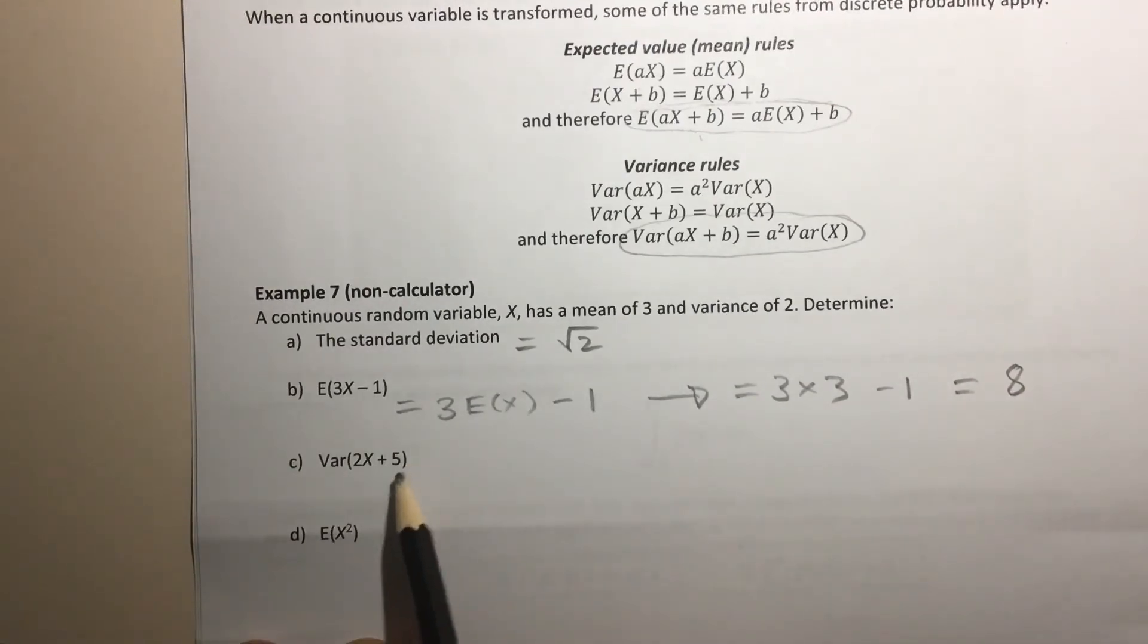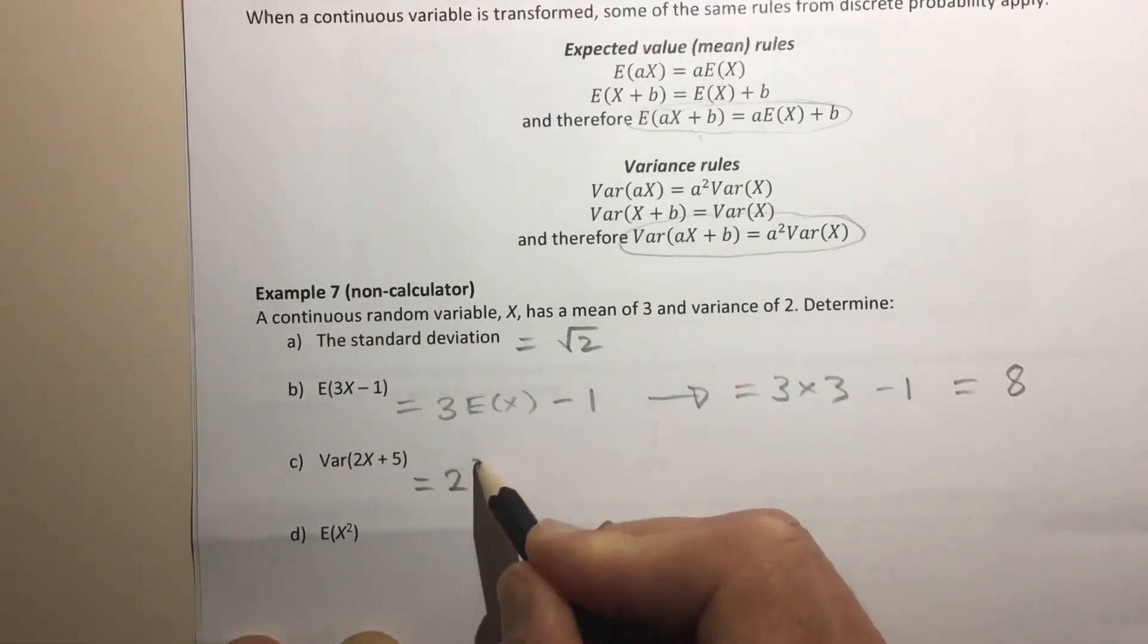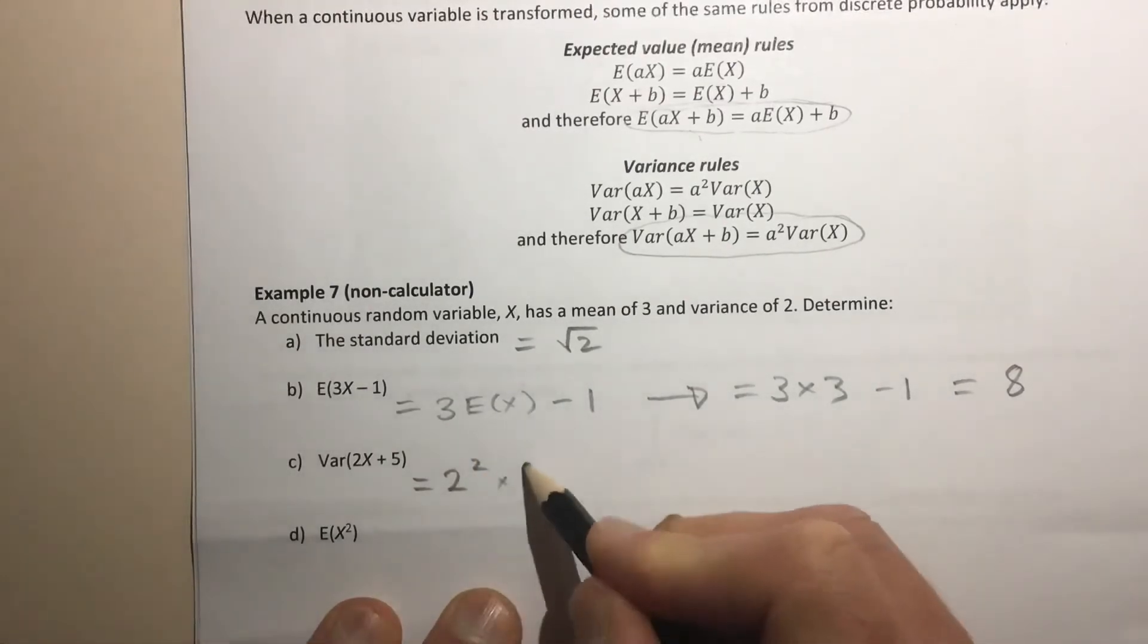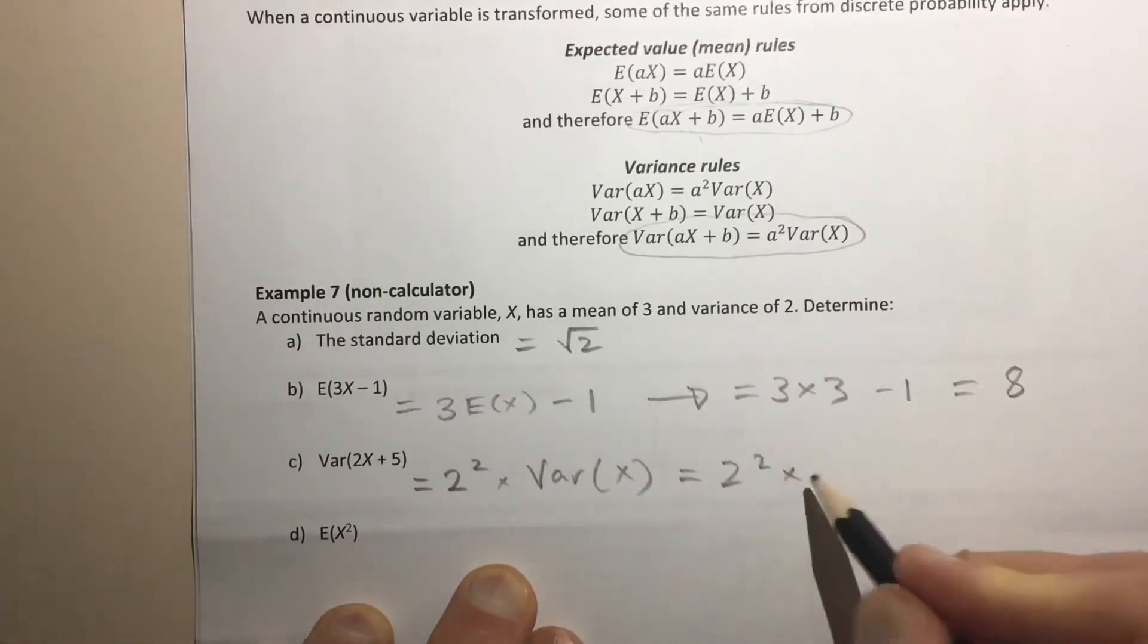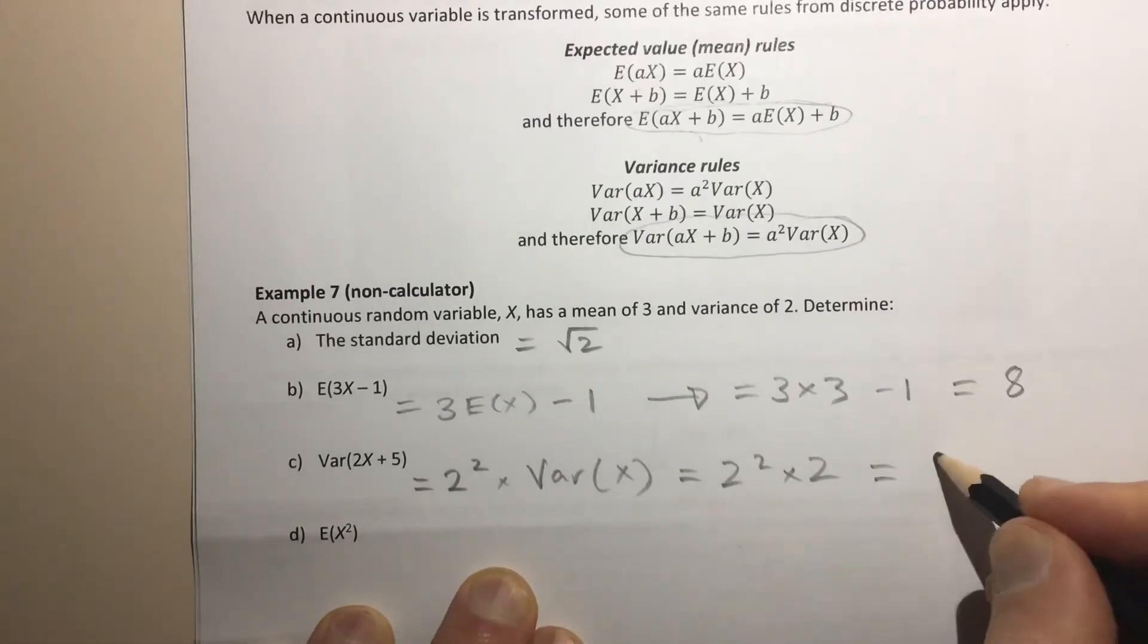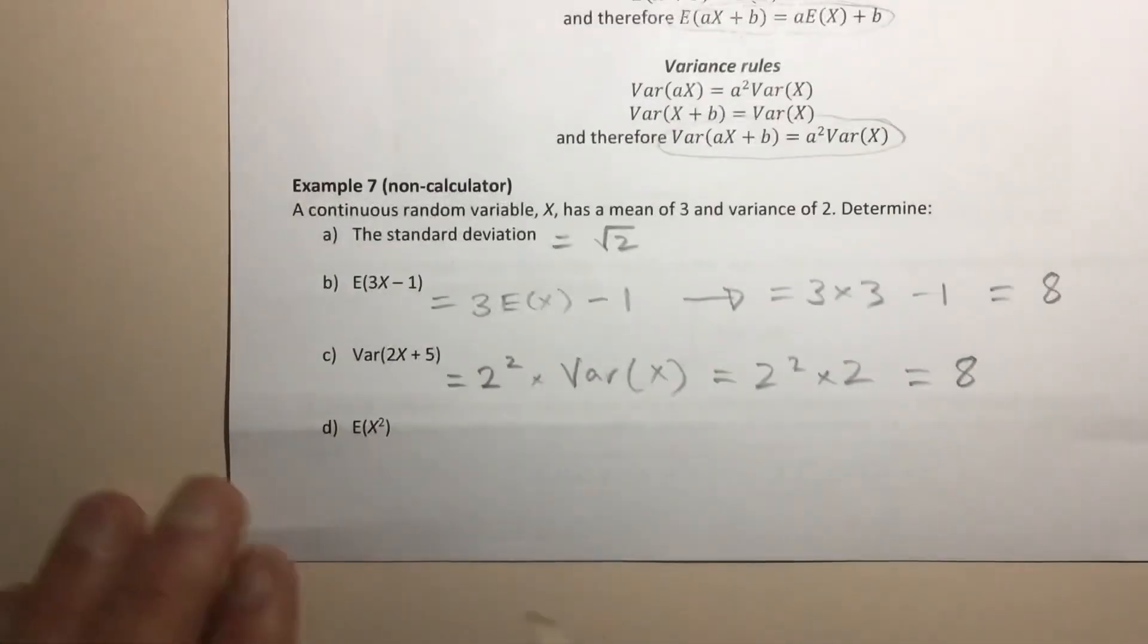The variance of 2X + 5, well, remember that plus 5 won't do anything to the variance, but this times 2 will. So this will just equal 2² times the original variance of X. And so that's 2² times 2, which of course is 4 times 2, which coincidentally is 8. That is just a coincidence, that's not meant to happen or anything like that.